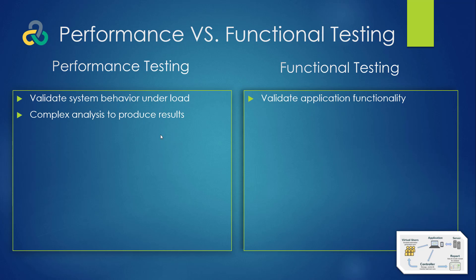For performance testing, analysis is pretty complex because you're looking at metrics from the application server, middleware, and database — CPU utilization, memory usage, disk I/O, and other metrics. If you're using Java or .NET frameworks you'd also look at garbage collection and memory usage. For functional testing, on the other hand, it's pretty simple: you have your test cases based on business requirements, you have adequate coverage, and basically the test is either a pass or fail.